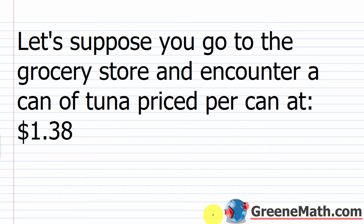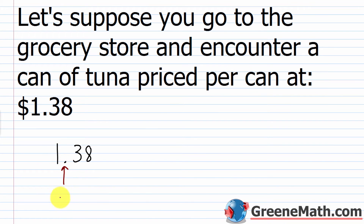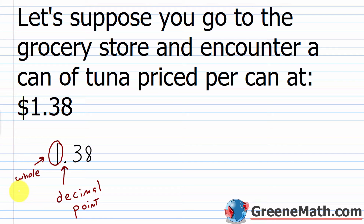To get our feet wet with decimals, let's run through a typical scenario. Suppose you go to the grocery store and encounter a can of tuna priced at $1.38. This is typically how you're going to see decimals. Now, just writing 1.38 — this dot is called a decimal point. What's to the left of the decimal point is just a whole number, a whole amount. To the right of the decimal point is part of a whole.